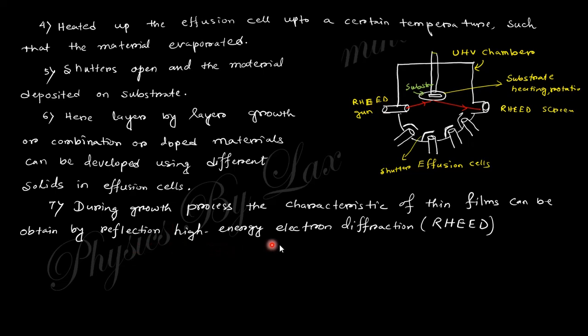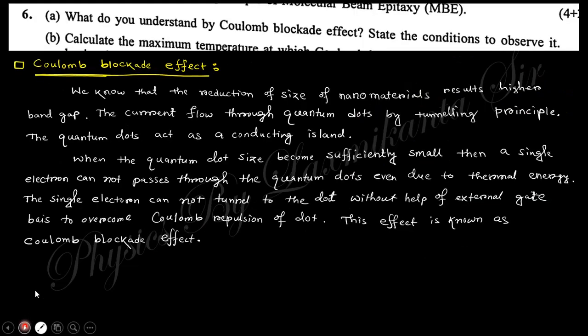Next question says what do you understand by Coulomb blockade effect? Actually, when the size of nanomaterial is reduced, the band gap also increases from the previous lecture. But there will be a tunneling effect through the quantum dot. Suppose there are two thin films, within those two thin films they generate a quantum dot.